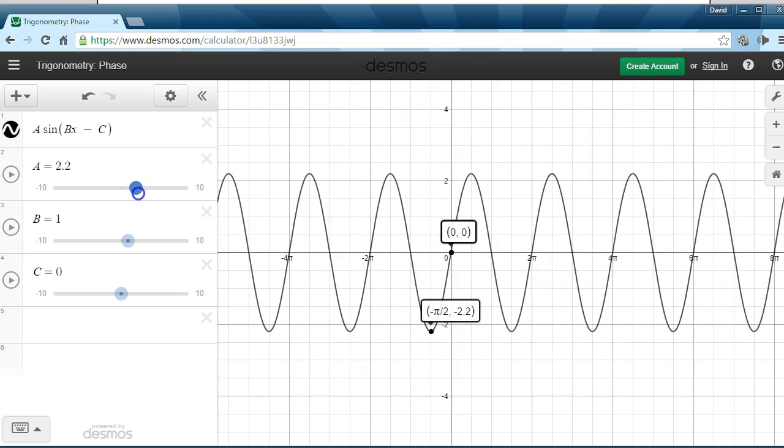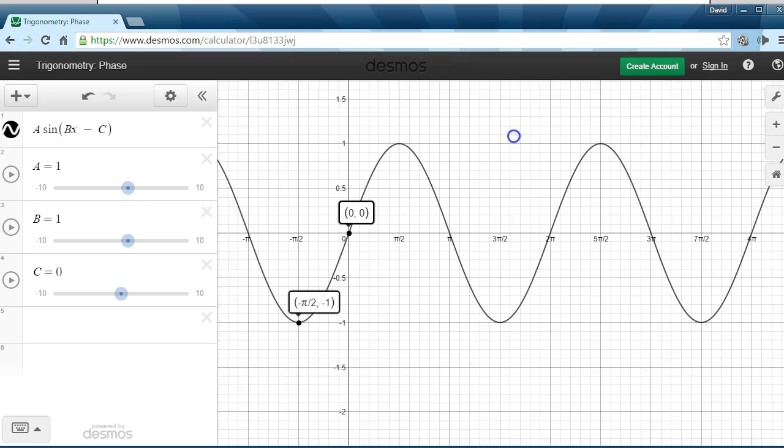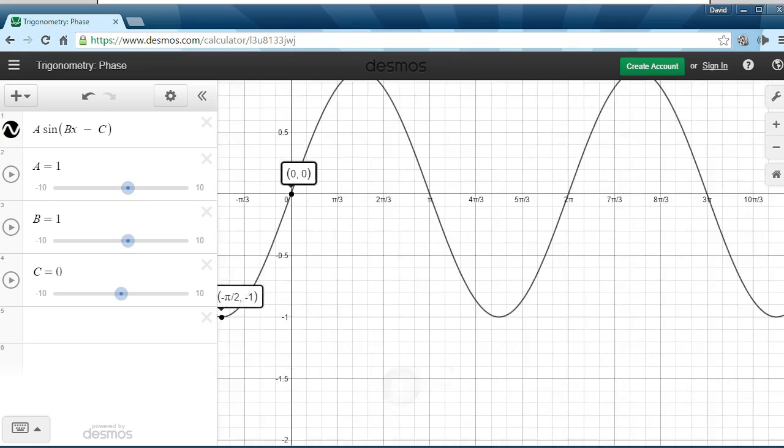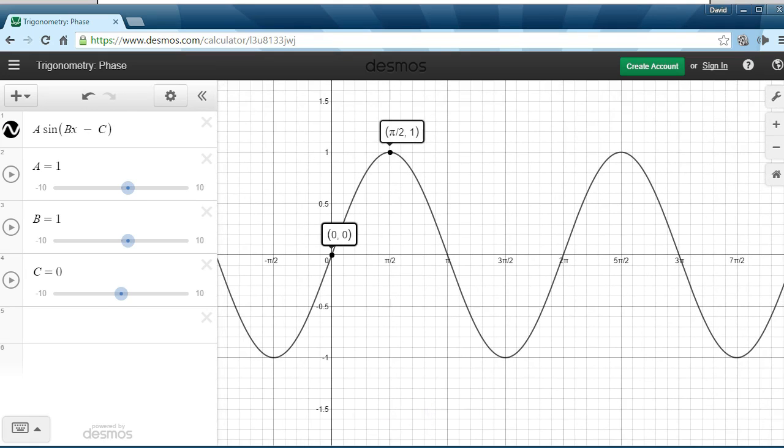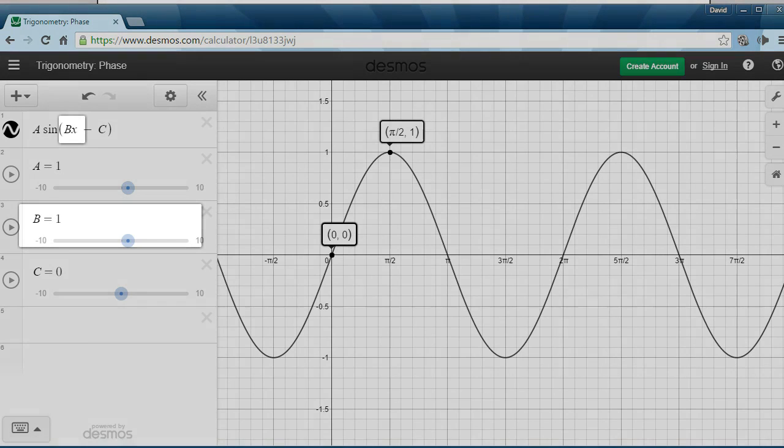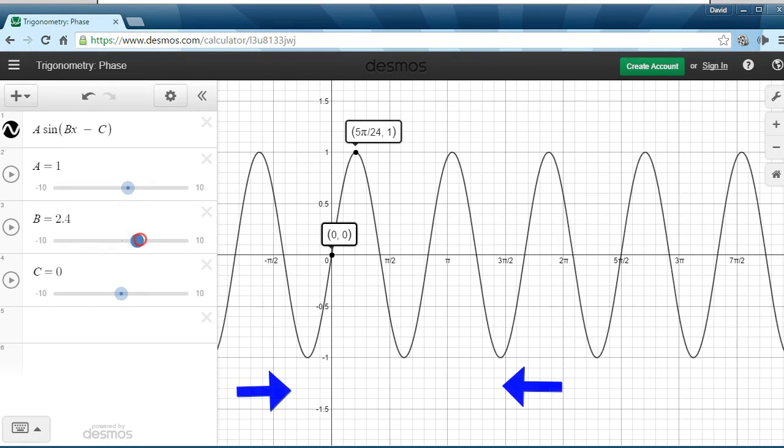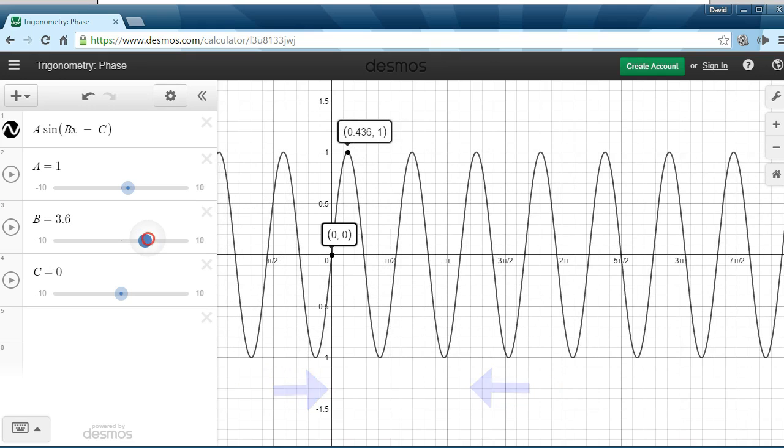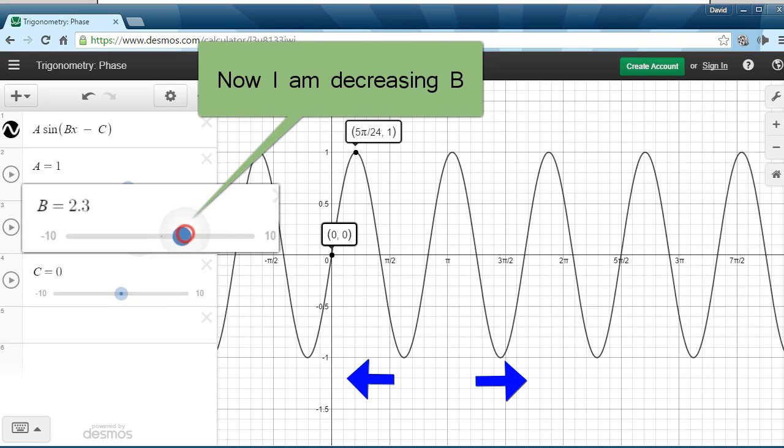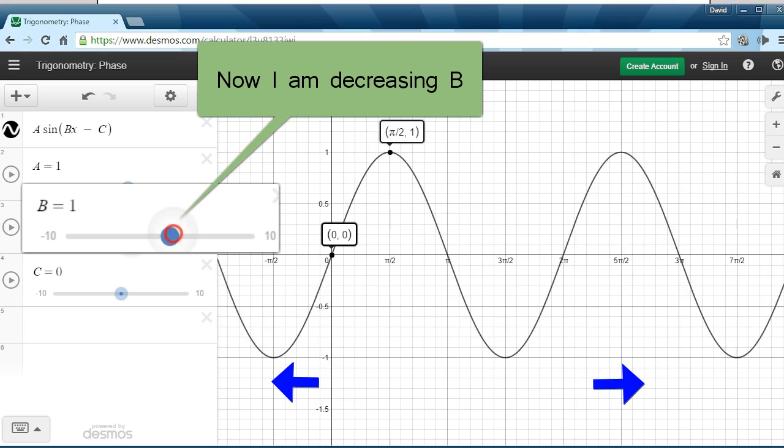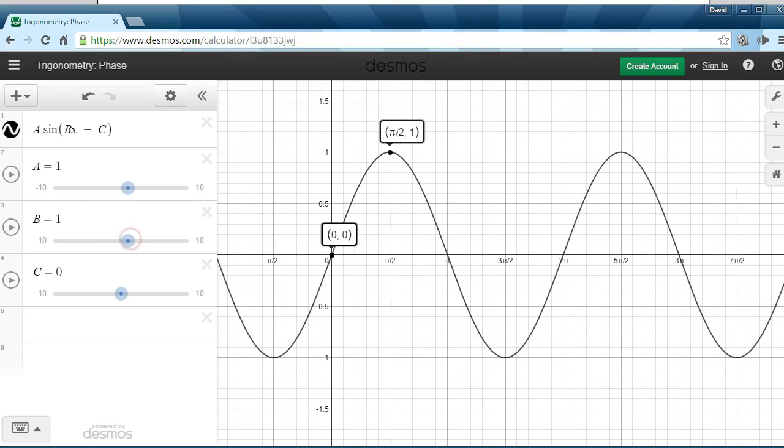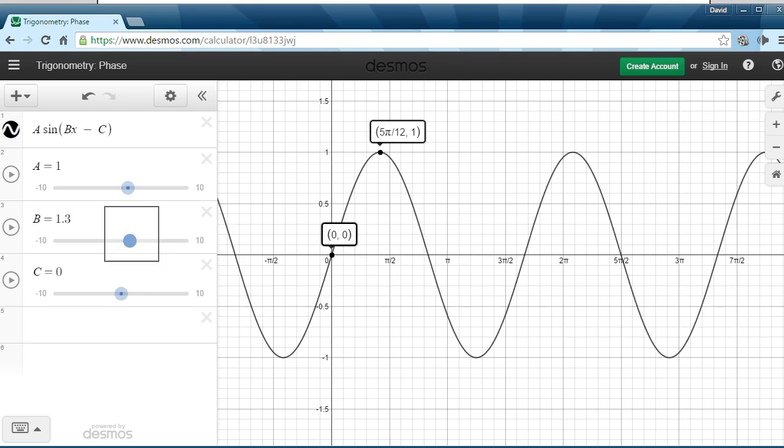Now, what is B going to control? Well, notice when I make B bigger, B is the coefficient of x inside the sine function. When I make B larger, notice that the period shrinks. How long it takes to go from back to where we started. Notice that's from 0 to 2 pi. That's shrinking when I make B bigger and bigger.